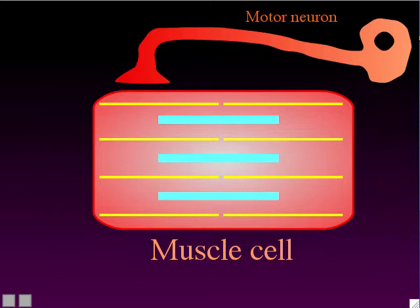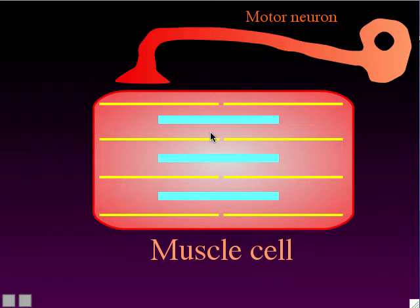Notice that none of the proteins themselves got shorter — the myosins are just as long as they were before, and the actins are just as long as before. What happened is their arrangement got shorter by the actins sliding inward over the myosins into a more compact arrangement. That's how the sliding filaments made the muscle cell shorter.